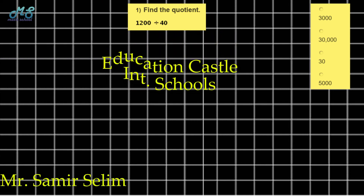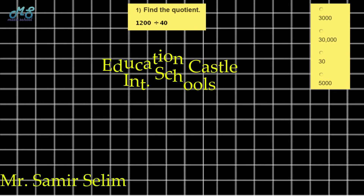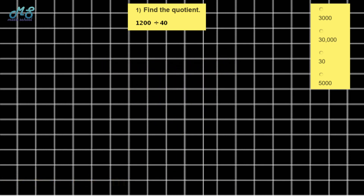Bismillahirrahmanirrahim. Hello everybody, hello Grade 5. Today we will study the math revision for Grade 5. First, find the quotient of 12 hundreds divided by 40. How can we divide? It's mental math we studied before.